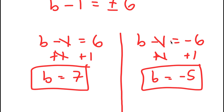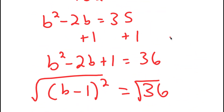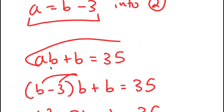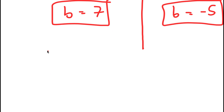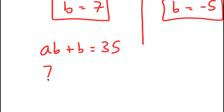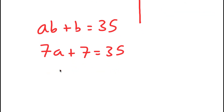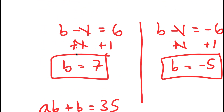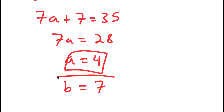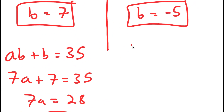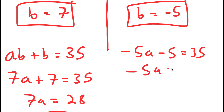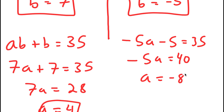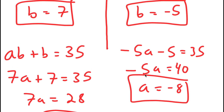Now I plug these back into AB plus B equals 35. If B equals 7, I get 7A plus 7 equals 35, meaning 7A equals 28, so A equals 4. If B equals negative 5, I get negative 5A minus 5 equals 35, meaning negative 5A equals 40, so A equals negative 8. My two solutions are A equals 4 with B equals 7, and A equals negative 8 with B equals negative 5.